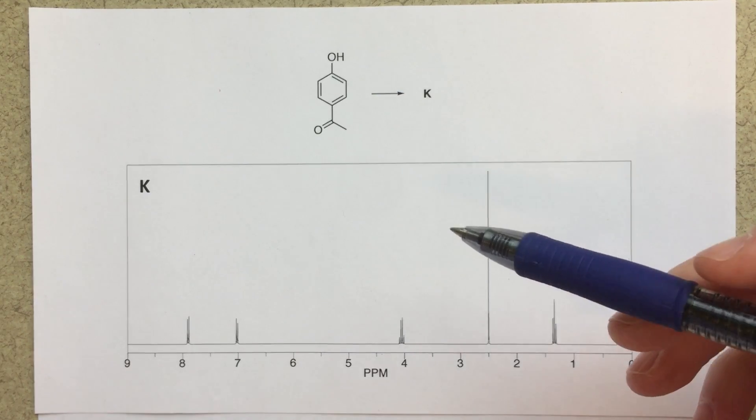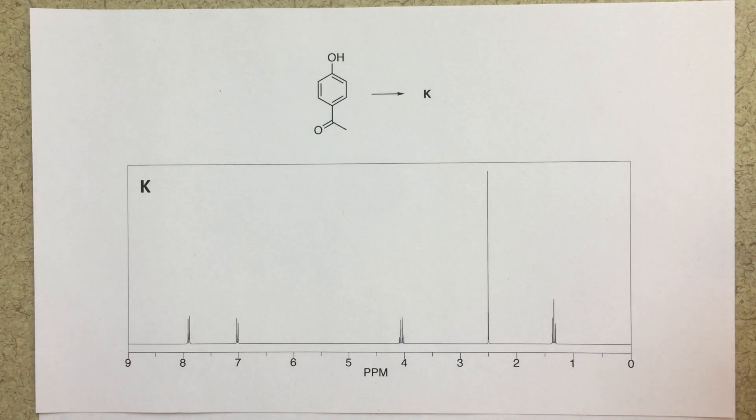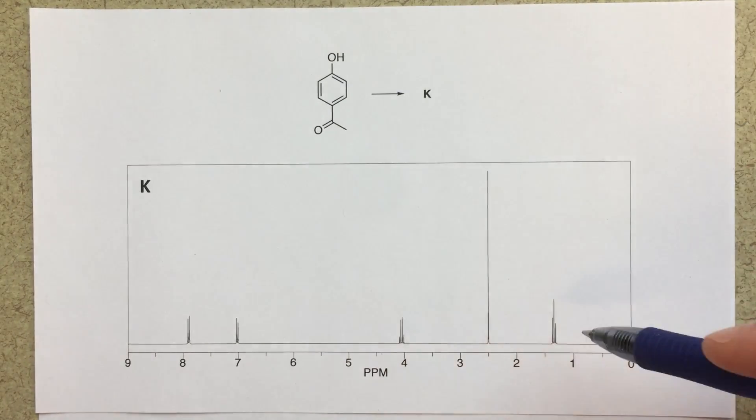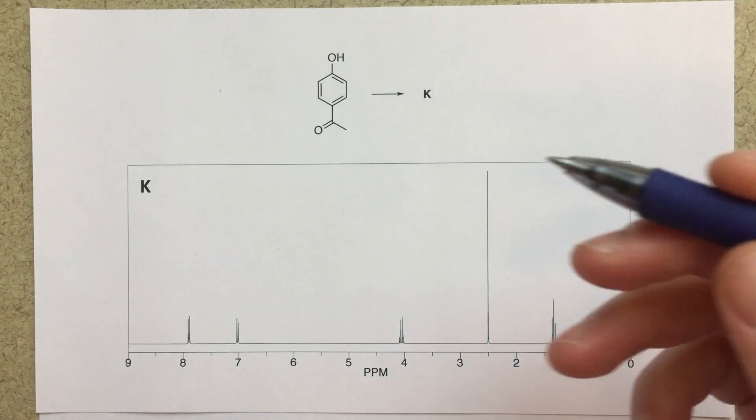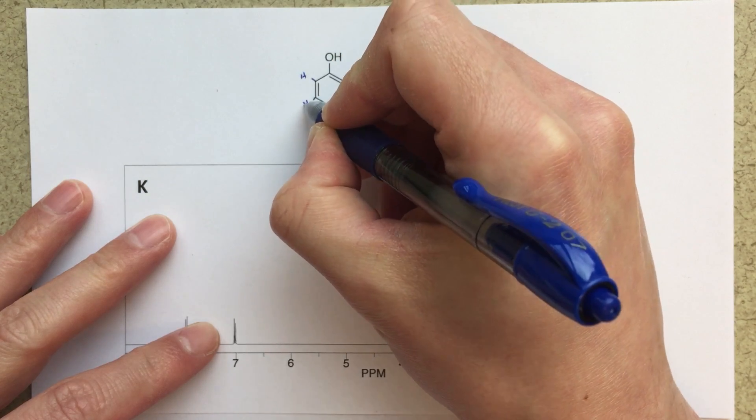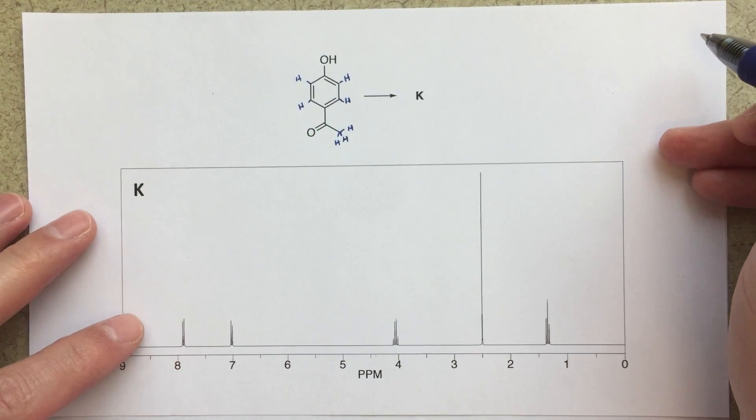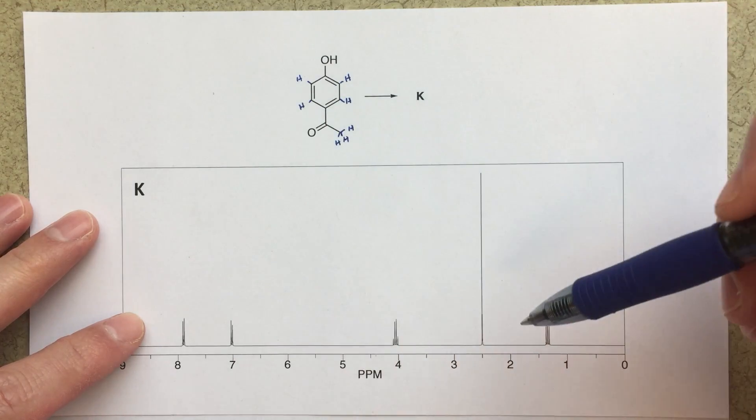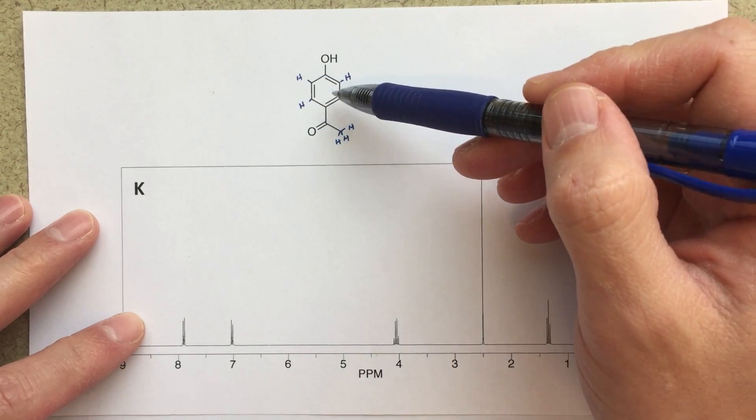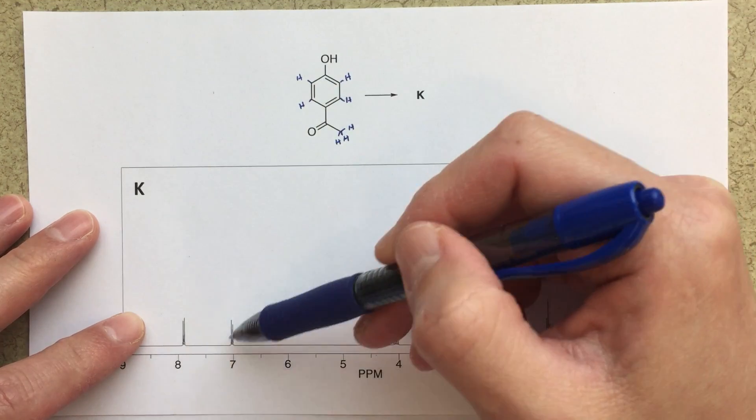The first thing I would do in a problem like this is break down my starting material and think about the different peaks I would expect to see. Then try to use that information to see maybe what's missing or what's added in my final product NMR. So first I would go through and draw in my little protons here. I'm gonna have three protons here and obviously my OH proton there as well. Looking at where these things show up, first obviously my aromatic region, these two protons here. Those would be equivalent so I would see two different peaks. They should be two H doublets in my aromatic region.